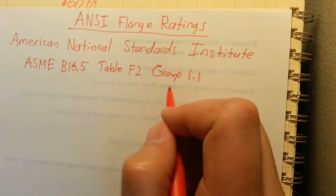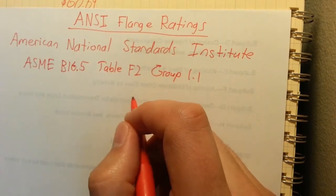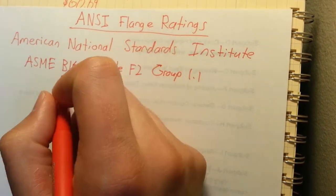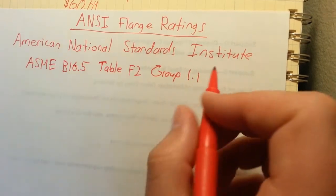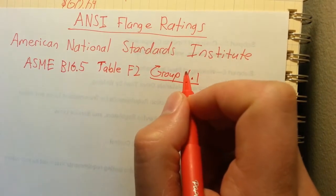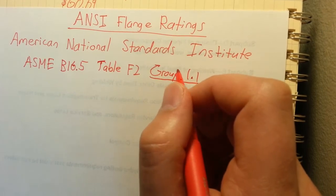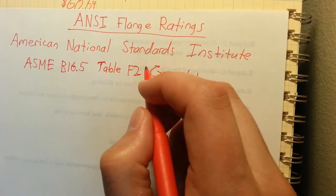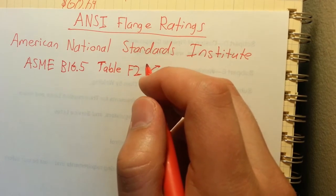There's about 10 or 15 different groups in B16.5. Group 1.1 is the one you want to use. The other ones have to do with different material manufacturing, carbon content of the steel, and things like that.